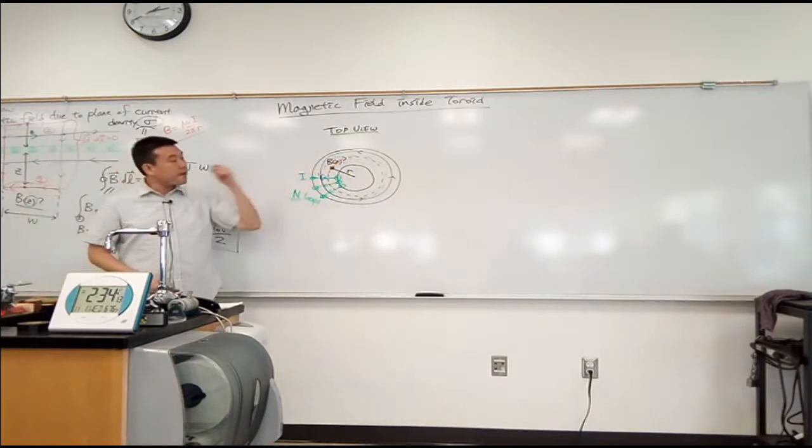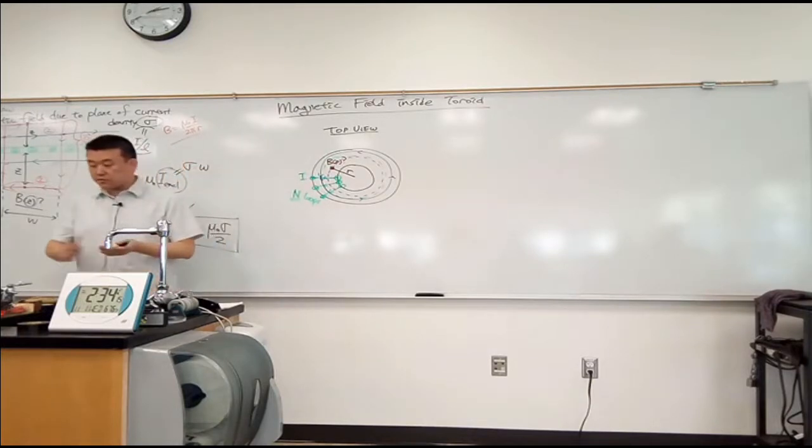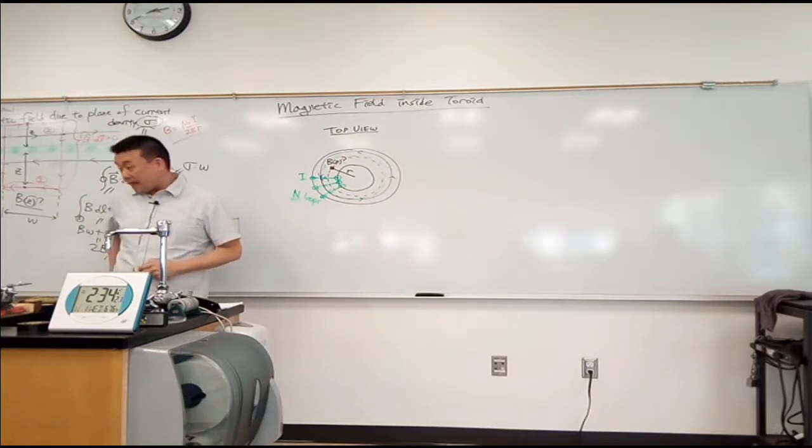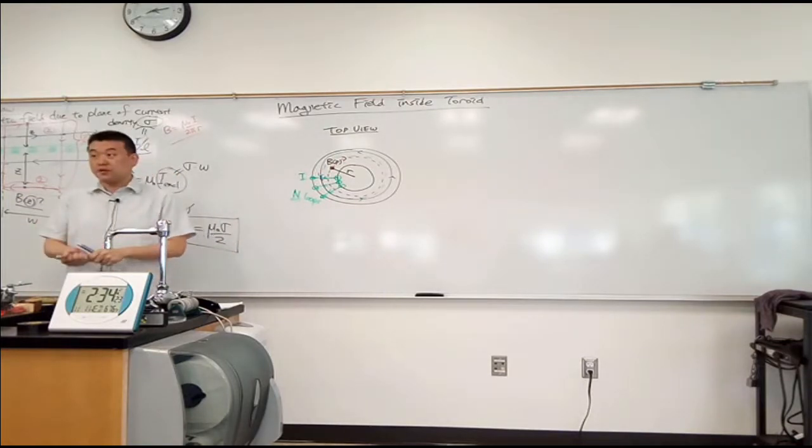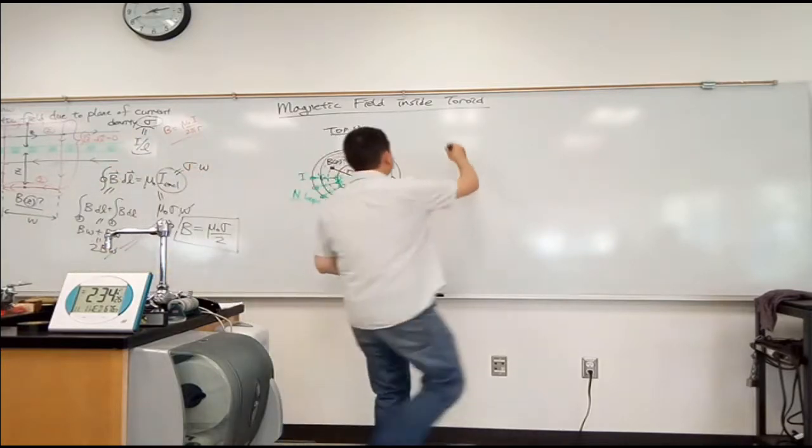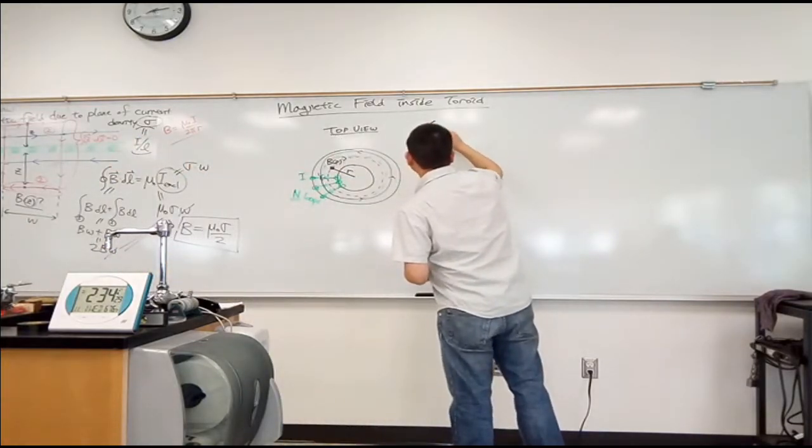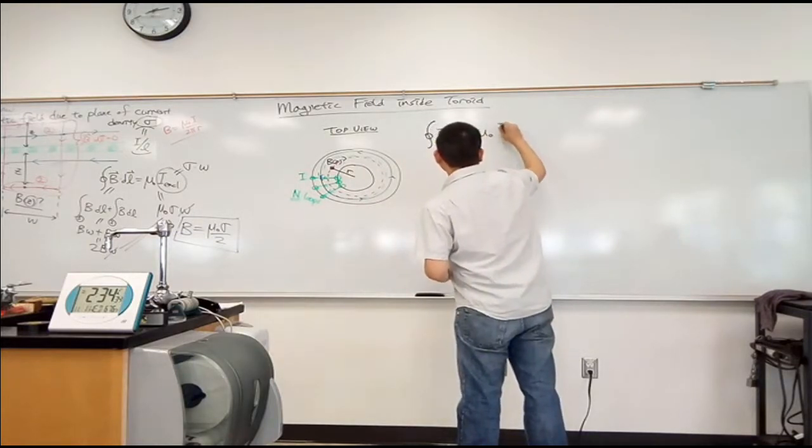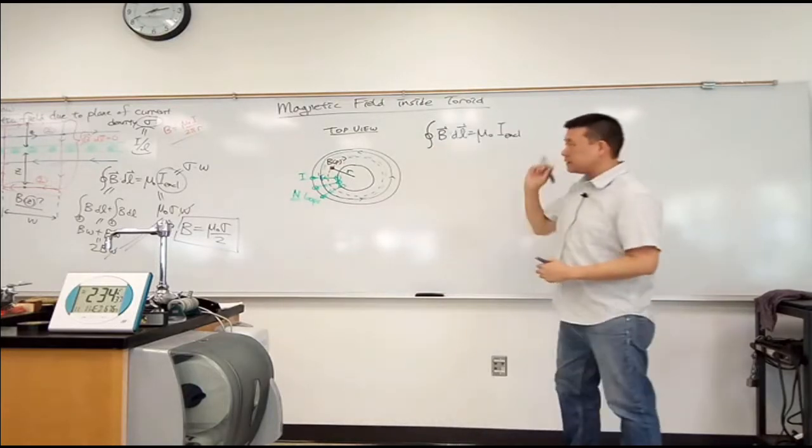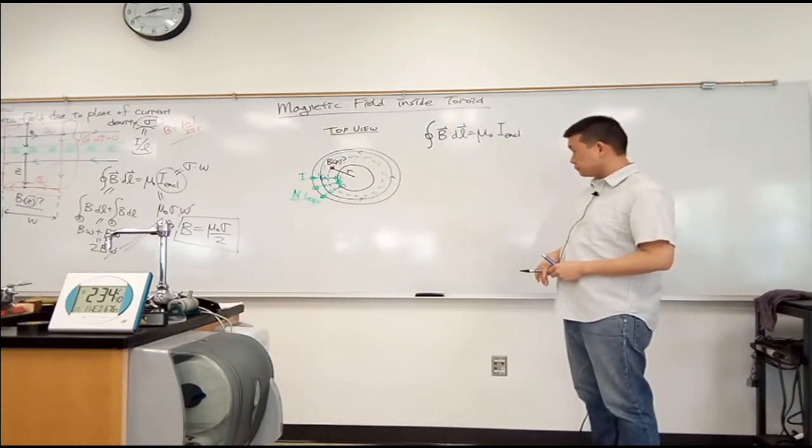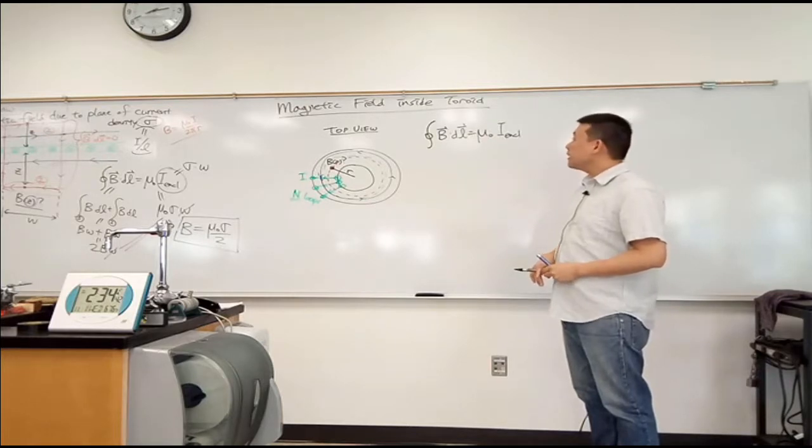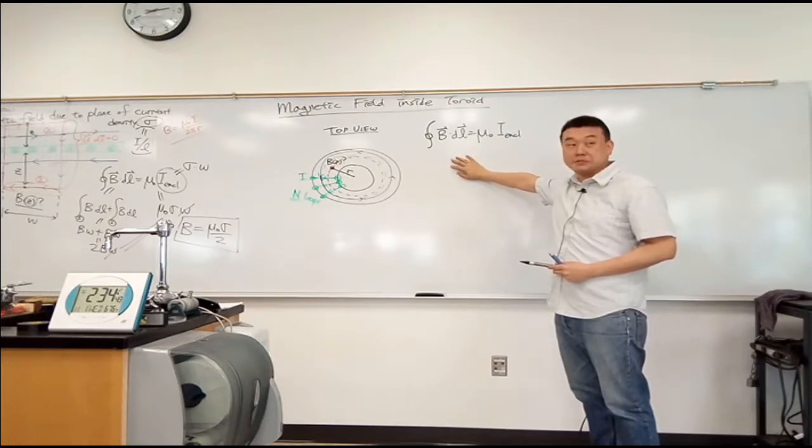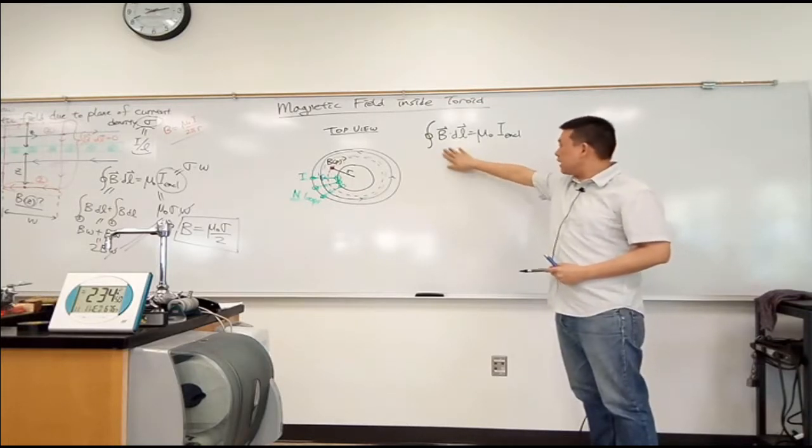So, we picked the Amperian path. I think we are ready to just get started with our usual calculation. We are going to start off by pretending that we are going to do some kind of integral. So, we write down Ampere's law. The integral of B dot dl is equal to mu naught i enclosed. All right. And we are going to start simplifying in a way that we never actually end up doing the integral that we are promising to.